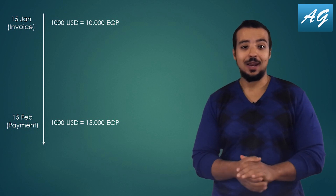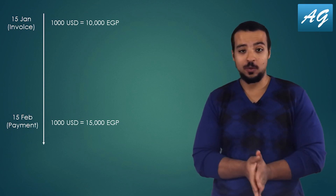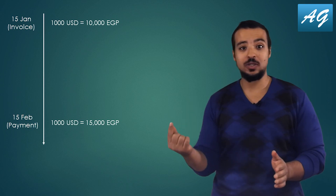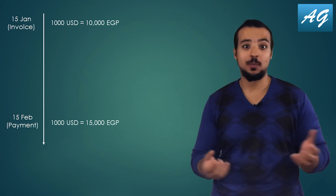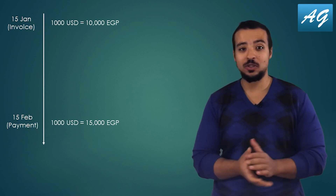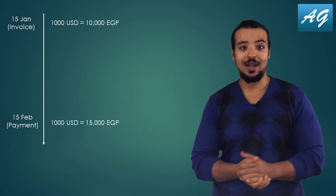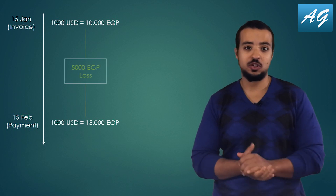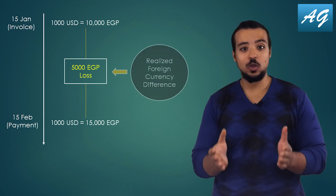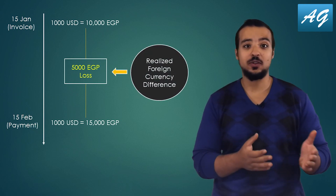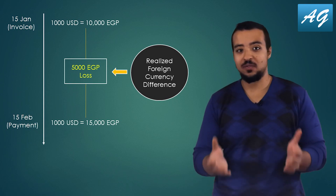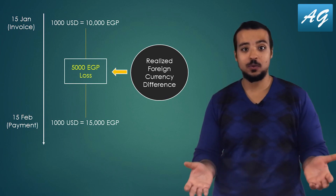According to my agreement with the supplier, I'm going to pay him after one month, so on the 15th of February. Now let's assume that on the 15th of February the exchange rate was 1 USD equal to 15 Egyptian pounds. So instead of paying 10,000 Egyptian pounds, I actually have to pay 15,000 Egyptian pounds. I have lost 5,000 Egyptian pounds, and this is what we call a realized foreign currency difference.